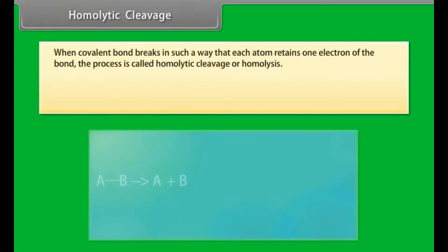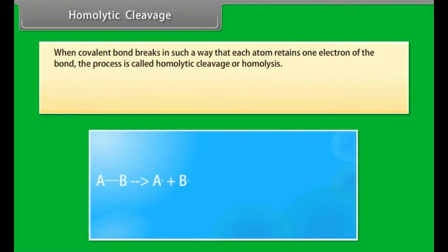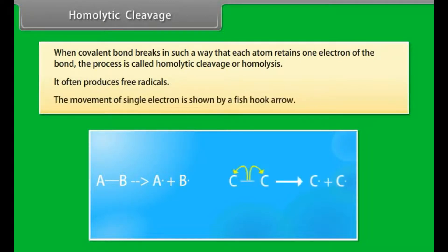Homolytic cleavage. When a covalent bond breaks in such a way that each atom retains one electron of the bond, the process is called homolytic cleavage or homolysis. It often produces free radicals. The movement of a single electron is shown by a fishhook arrow.